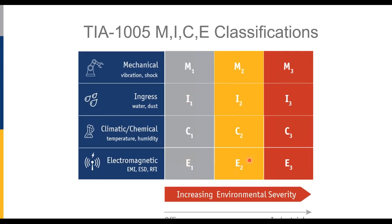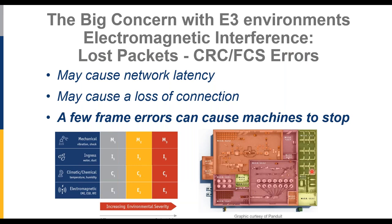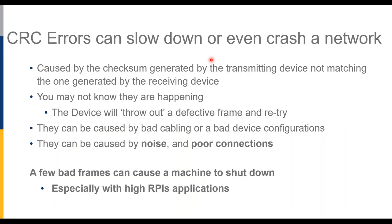Looking at the MICE chart, as you go from E1 to E2 to E3, you move to increasing environmental severity with more electromagnetic interference. What we worry about with that EMI are CRC and FCS errors — cyclical redundancy check or frame checksum errors. These are caused by the checksum generated by the transmitting device not matching the one generated by the receiving device; a bit that was 'off' gets interference and arrives as 'on,' corrupting the frame.